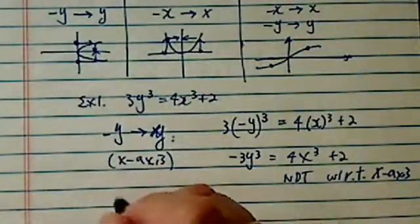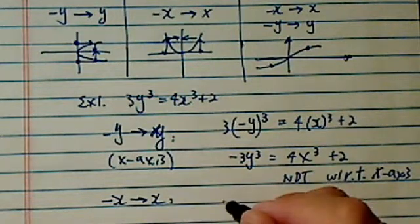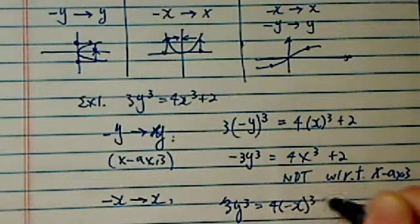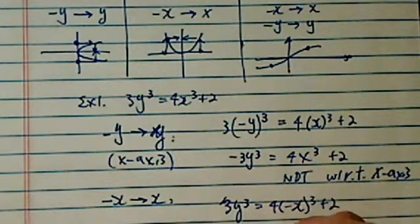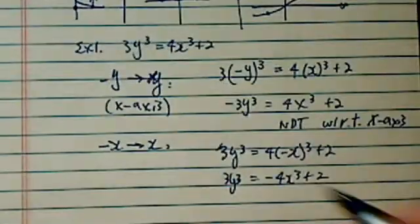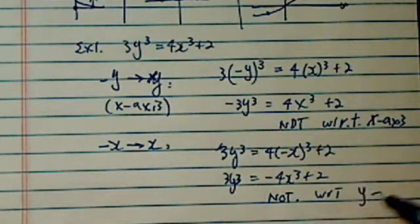Let's try the next one. Let's replace minus x with x. So we have 3y³ = 4(-x)³ + 2. Then we have 3y³ = -4x³ + 2. So we didn't get back what our original equation was. So it's not with respect to the y-axis either.